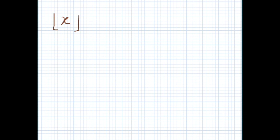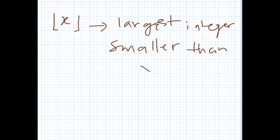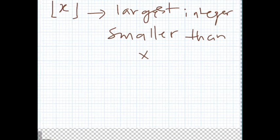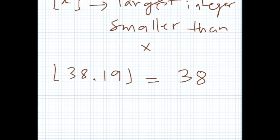The floor function, represented by this notation, is the largest integer smaller than x. For example, the floor of 38.19 is just 38. So for positive real numbers, it's simply the integer part.